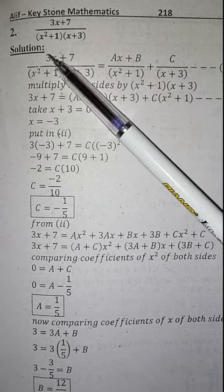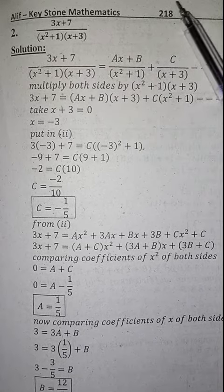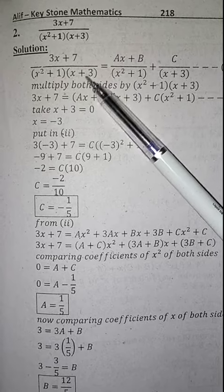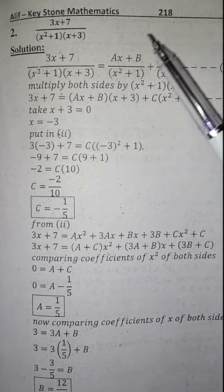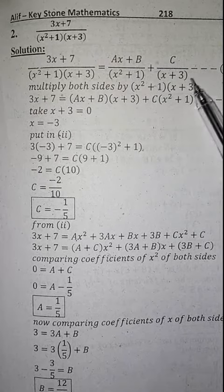Today we will have 3x plus 7 over x square plus 1 into x plus 3. Students, we will get this fraction of Ax plus B over x square plus 1 plus C over x plus 3.